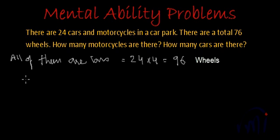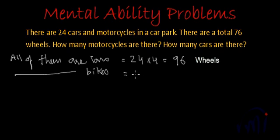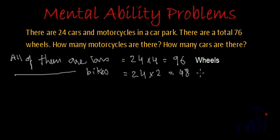And if all of them are bikes, there should be 24 multiplied by 2, that is 48 wheels.